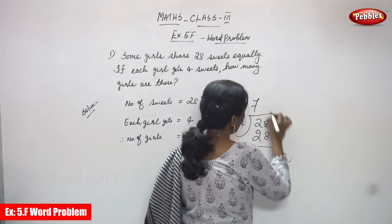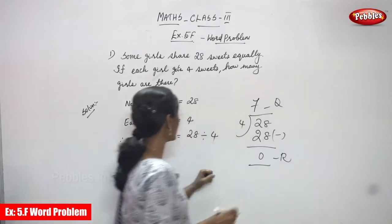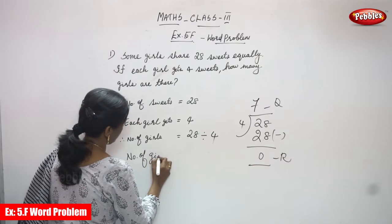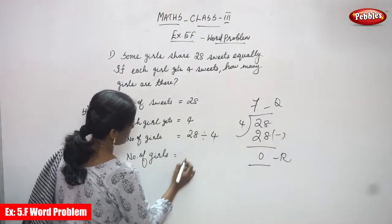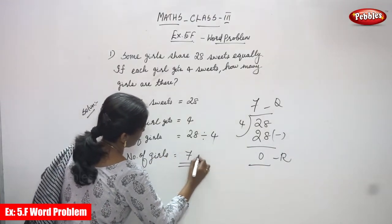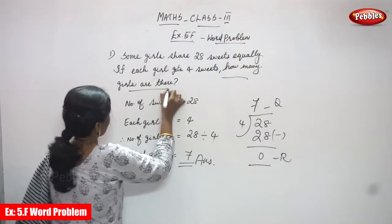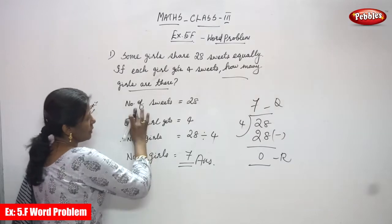So the answer is the number of girls, which is seven. How many girls are there? The total number of girls is seven. So the total number of sweets is 28.